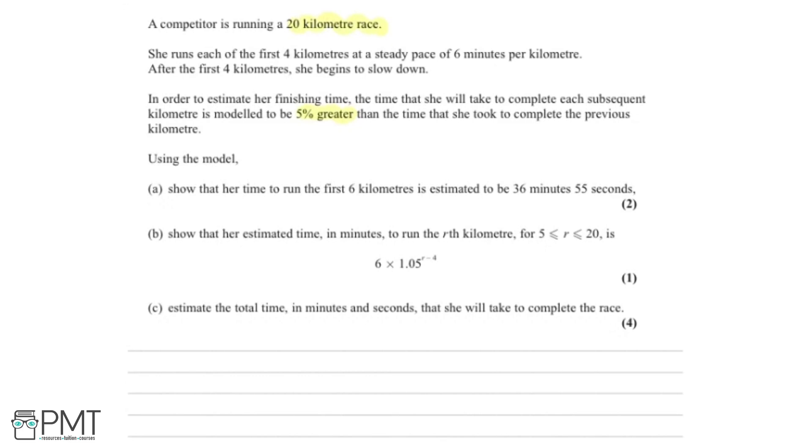So using this model, part A says we need to show that her time to run the first 6 kilometers is estimated to be 36 minutes and 55 seconds, and this is for two marks. To work out the total time for the first 6 kilometers, we need to have a look back in the question at some of the detail.